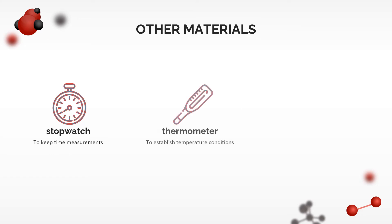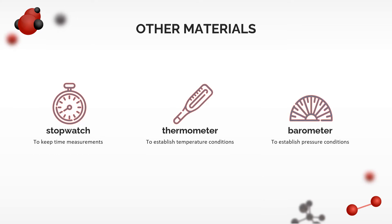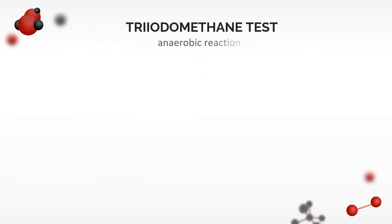Other materials that were needed for this experiment include a stopwatch for keeping time measurements, a thermometer to establish temperature conditions, and a barometer to establish pressure conditions. The anaerobic reaction with the yeast was further investigated by testing the presence of ethanol, using the tri-iodomethane test. For this test, the following materials were used.